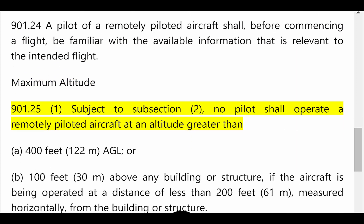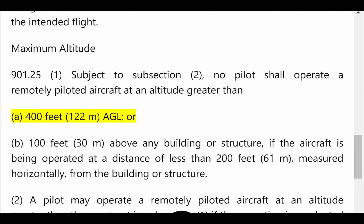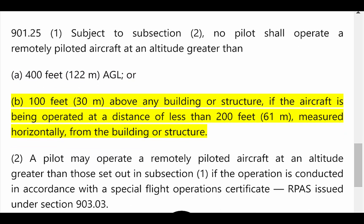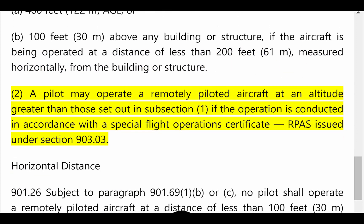Maximum Altitude. 901.25(1): Subject to subsection (2), no pilot shall operate a remotely piloted aircraft at an altitude greater than (a) 400 feet (122 meters) AGL, or (b) 100 feet (30 meters) above any building or structure if the aircraft is being operated at a distance of less than 200 feet (61 meters) measured horizontally from the building or structure. (2) A pilot may operate a remotely piloted aircraft at an altitude greater than those set out in subsection (1) if the operation is conducted in accordance with a special flight operations certificate RPAS issued under section 903.03.